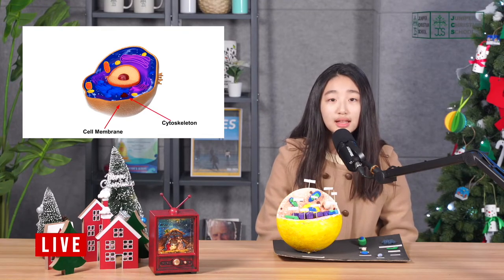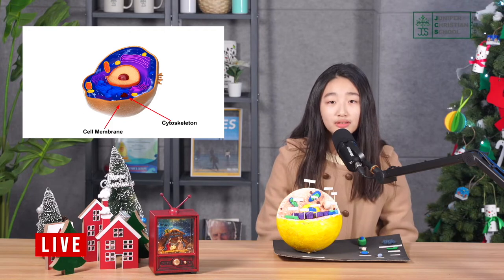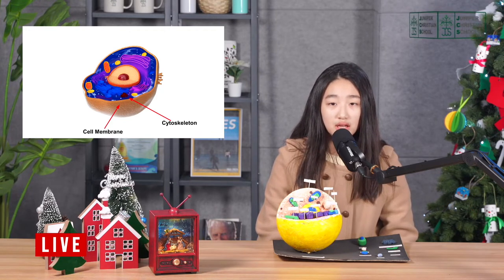Cytoskeleton. Cytoskeleton is the network of protein filaments and the function of the cytoskeleton is to support the cell and give the cell shape.